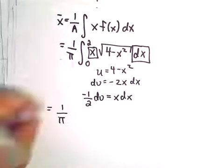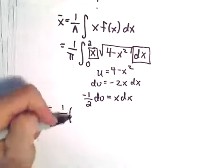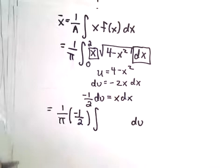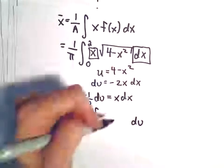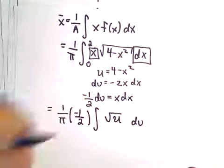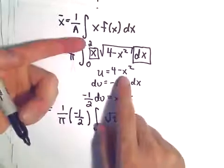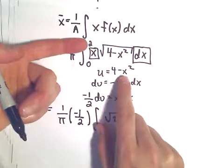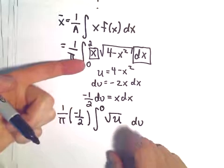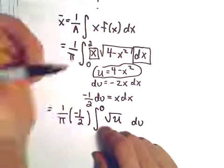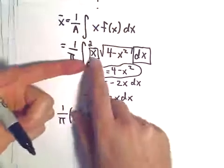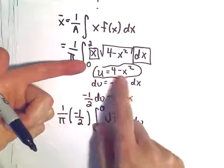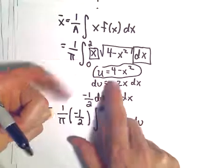So there's our 1 over pi that was present before. The x dx we can replace with negative 1 over 2 du. And then we would have the square root of 4 minus x squared, or equivalently, the square root of u. Notice if we change our limits of integration. If we plug in x equals 2, we'll get 4 minus 2 squared, or 4 minus 4, we'll get u equals 0. If we plug x equals 0 into our u substitution, we'll get 4 minus 0 squared, and we'll get u equals 4.